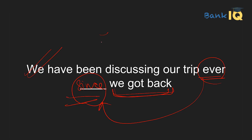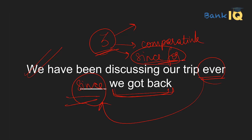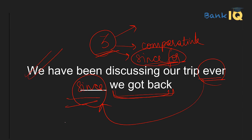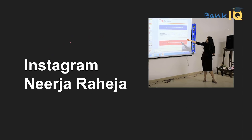हम लोगों ने 3 important aspects को cover किया। First: in, on, at (position) vs. to (direction/movement)। Second: comparative adjectives जैसे inferior, superior, anterior, posterior के साथ सिर्फ 'to' का प्रयोग करते हैं, 'than' का नहीं। Third: 'since' और 'for' के बीच usage difference। Please ensure you revise this first part thoroughly. If you have any doubts, you can mention them in the comment section.